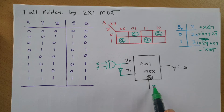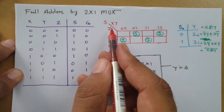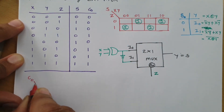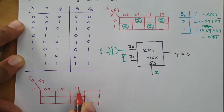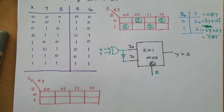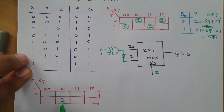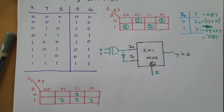Now let us simplify carry C0 using a Karnaugh map. Here I am considering C0 with input variables x, y, and z. The inputs are 00, 01, 11, 10 and z is 0 and 1. The 1s are placed at locations 011, 101, 110, and 111.